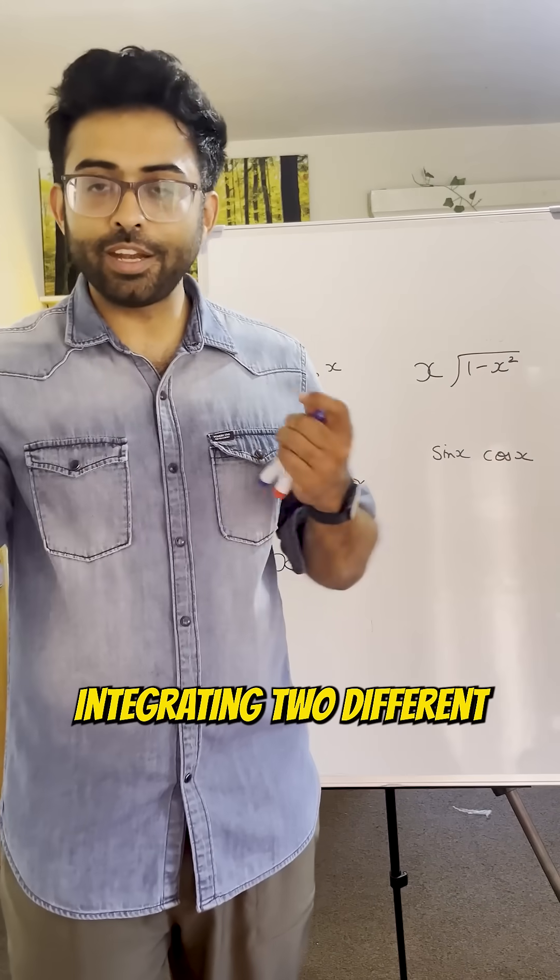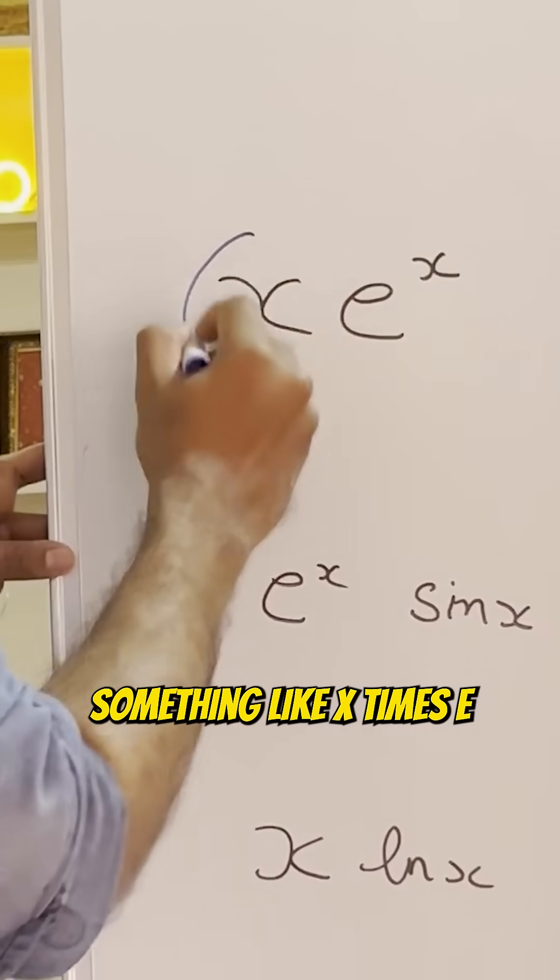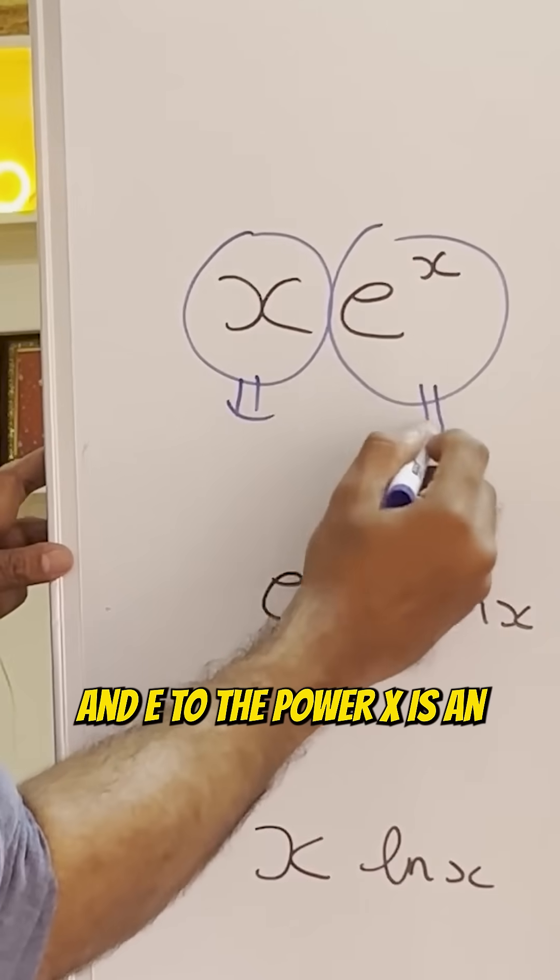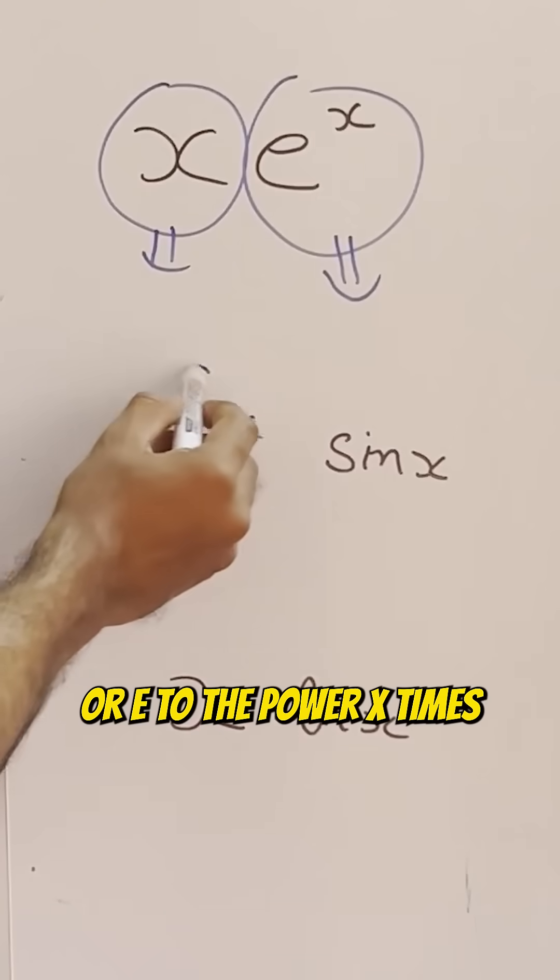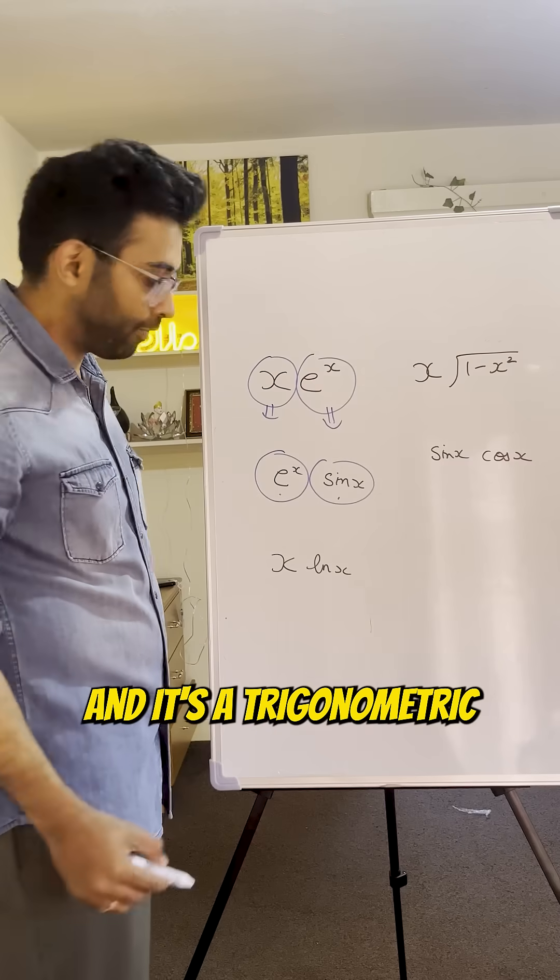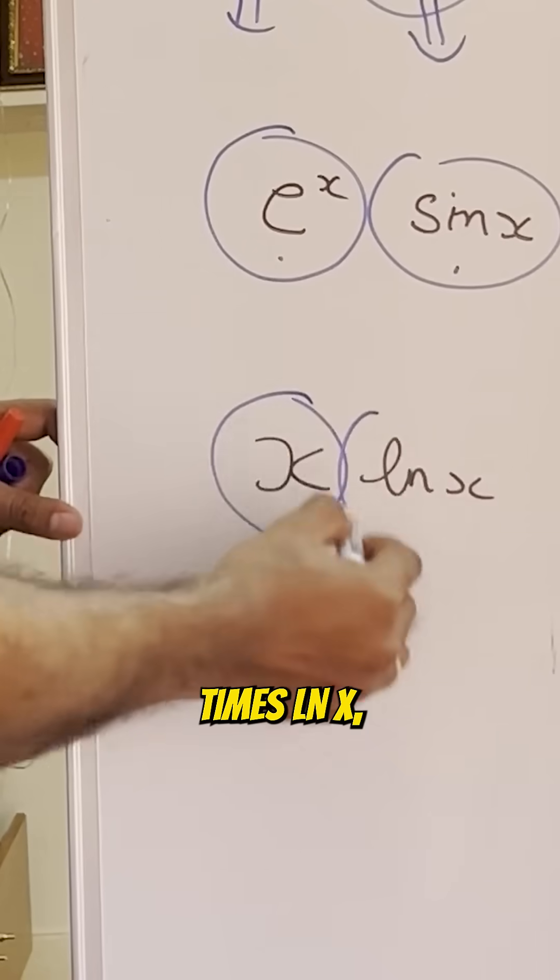Suppose you are integrating two different kinds of functions, something like x times e to the power x, where x is an algebraic function and e to the power x is an exponential function, or e to the power x times sin x, where it's an exponential function and a trigonometric function, or x times ln x.